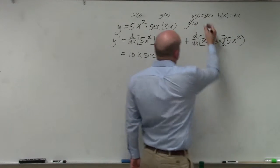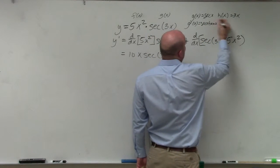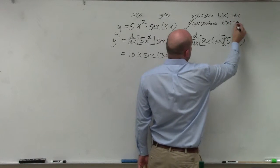So the derivative of g of x is going to be secant tangent, secant of x tan of x. And h prime of x is equal to 3.